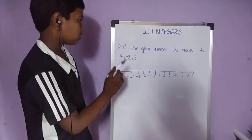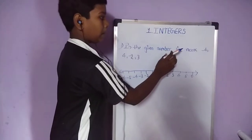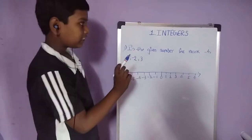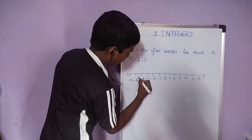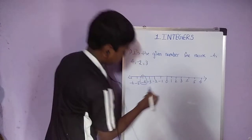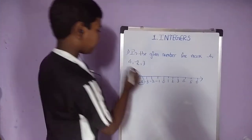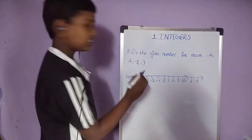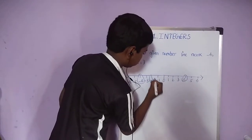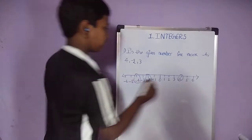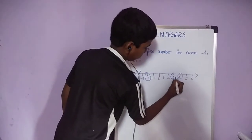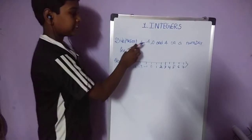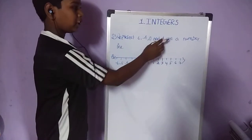Let us do some questions. In the given number line, mark minus 4, 4, minus 2, 3. First we mark minus 4, then 4, then minus 2, then 3. Next question: represent 6, minus 4, 0, and 4 on your number line.